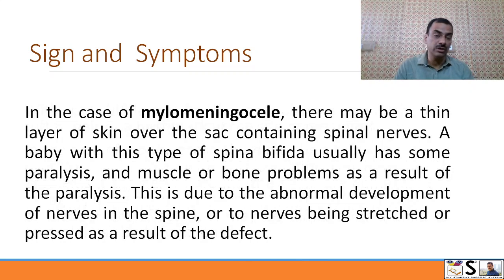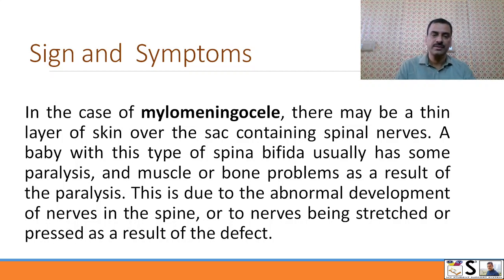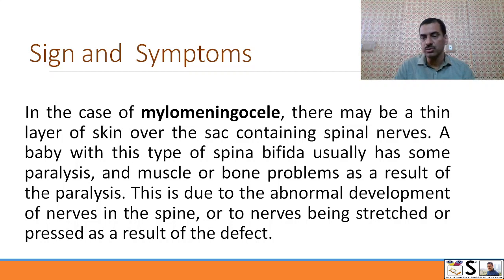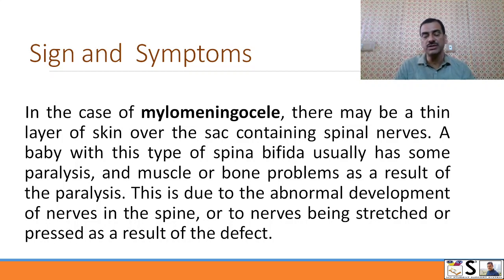In the case of myelomeningocele, there may be a thin layer of skin or membrane over the sac containing spinal nerves. A baby with this type of spina bifida usually has some paralysis, along with muscle and bone problems as a result of paralysis. This is due to abnormal development of nerves in the spine or the nerves being stretched or pressed as a result of the defect.